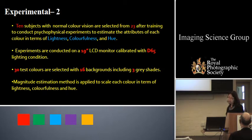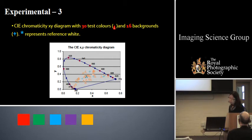Ten subjects with normal color vision are selected from 23 after training to conduct psychophysical experiments to estimate the attributes of each color in terms of lightness, colorfulness, and hue. This experiment is conducted on a 19-inch LCD monitor calibrated with D65 viewing condition. 30 test colors are selected with 16 backgrounds including 3 gray shades. The magnitude estimation method is applied to scale each color in terms of lightness, colorfulness, and hue.